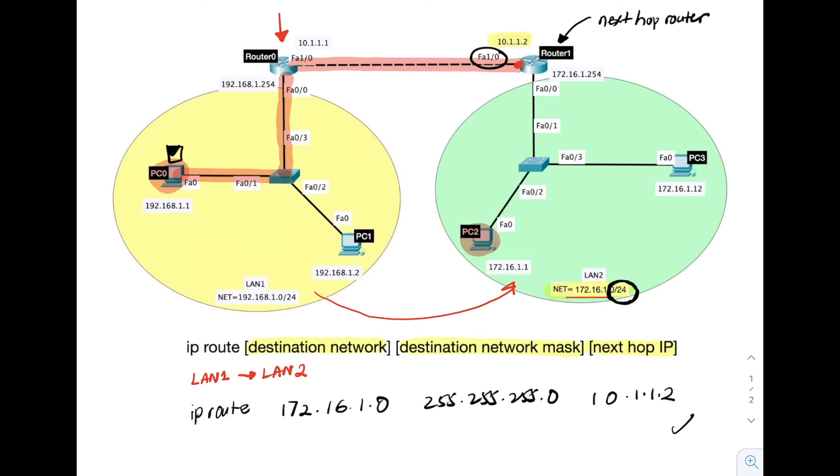So, there you go. That's the full static route command to go from LAN 1 to LAN 2. Thank you for learning networking with Avocado.